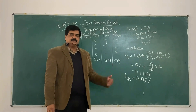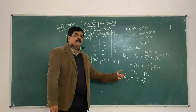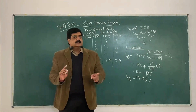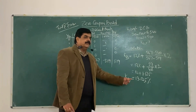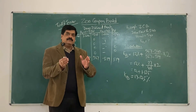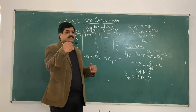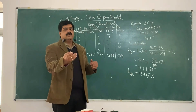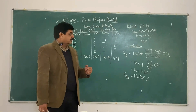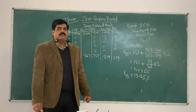That means the investors are getting a cost of 13.125% from the investor's point of view, and the company is having a cost of debt of 13.125% on this bond. So here, the cost of debt is acting from the investor's point of view as well.